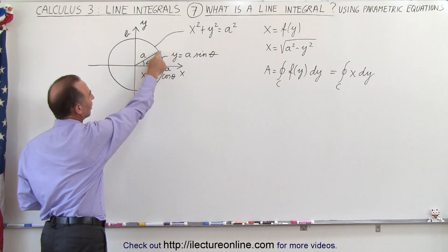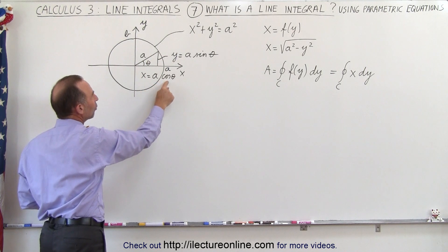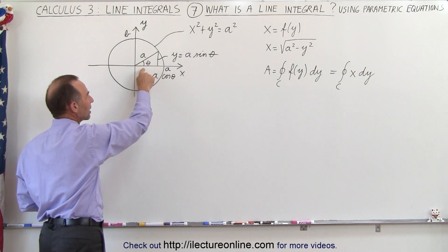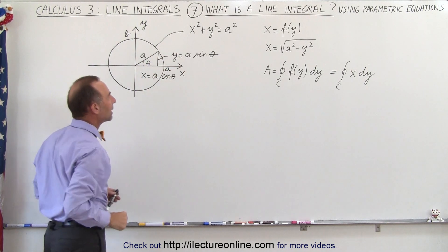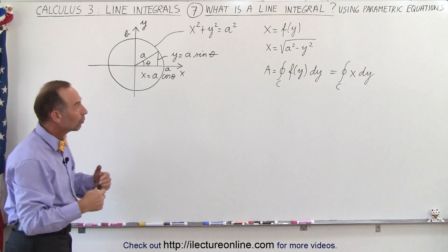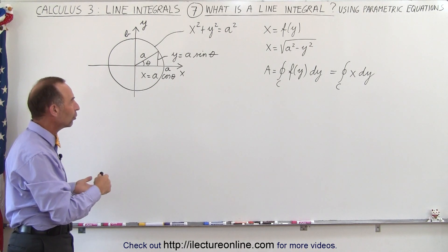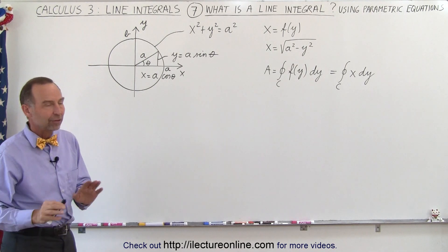But the x value of that point will be equal to a times the cosine of theta, where theta is the angle here, and y will be equal to a times the sine of theta. So we're going to replace x and y by a cosine of theta and a sine of theta.